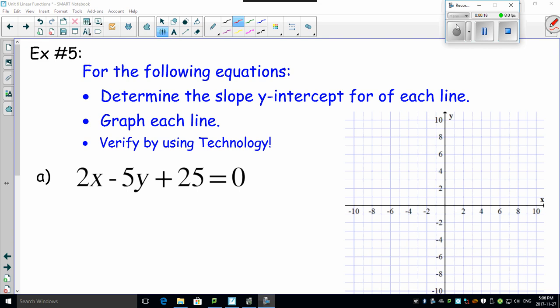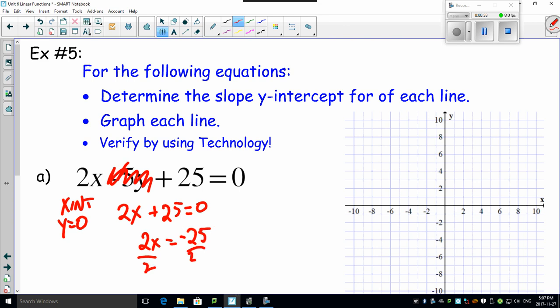If I look at the x-intercept here, I know that my y equals 0, which means this guy would be gone, which would leave me with 2x plus 25 equals 0. Bring the 25 over, that would give you minus 25, divide by 2, and x equals minus 12.5. Yuck!